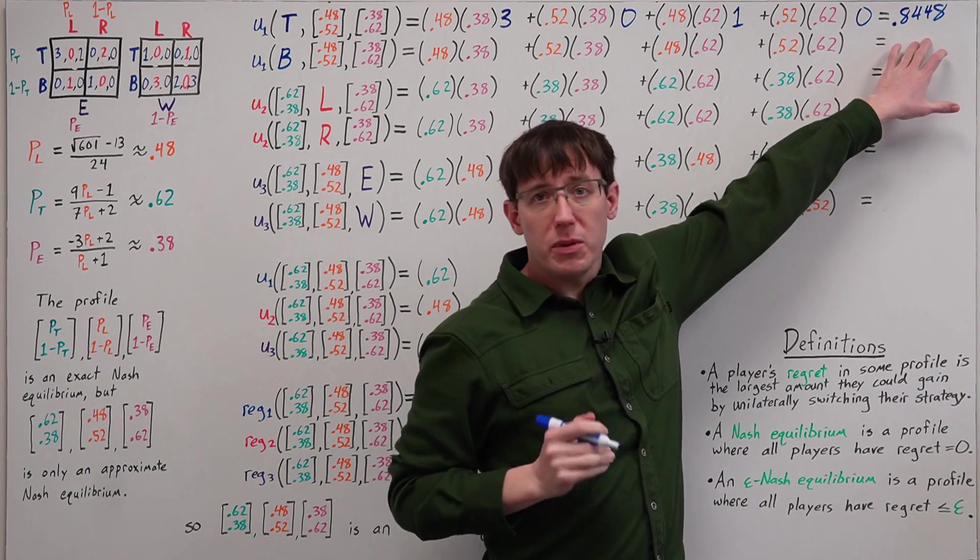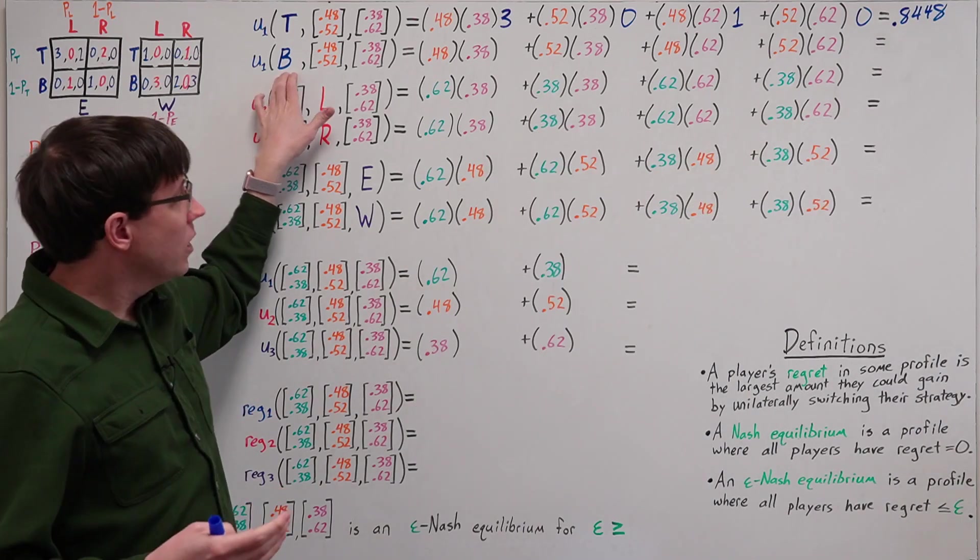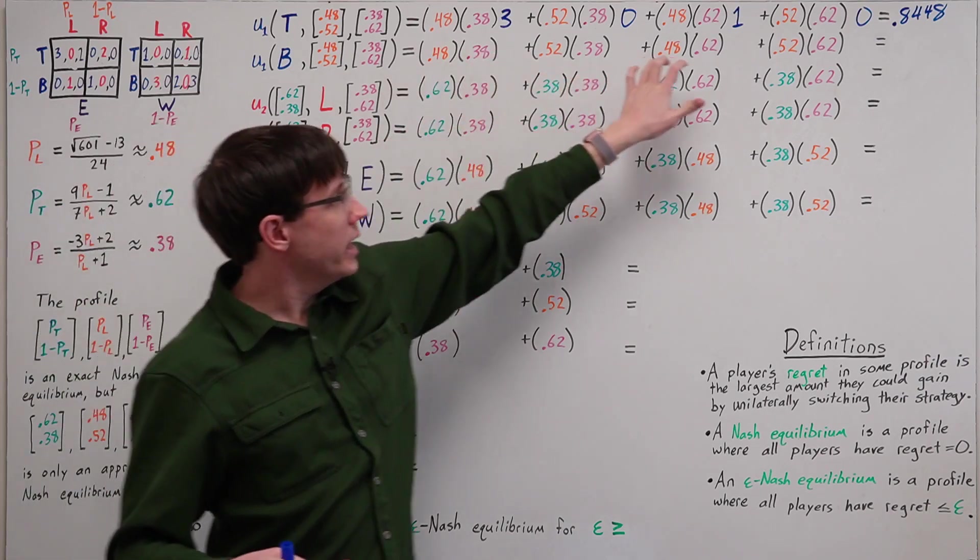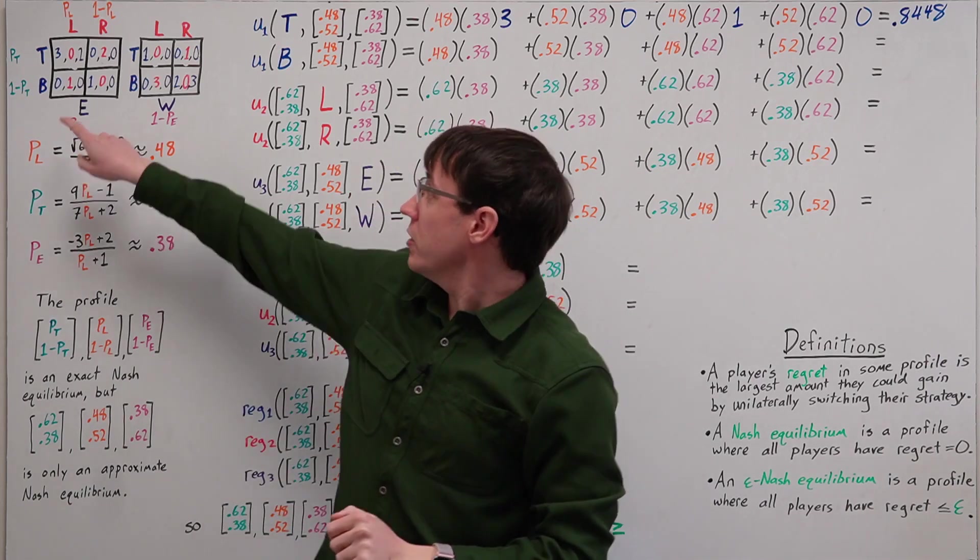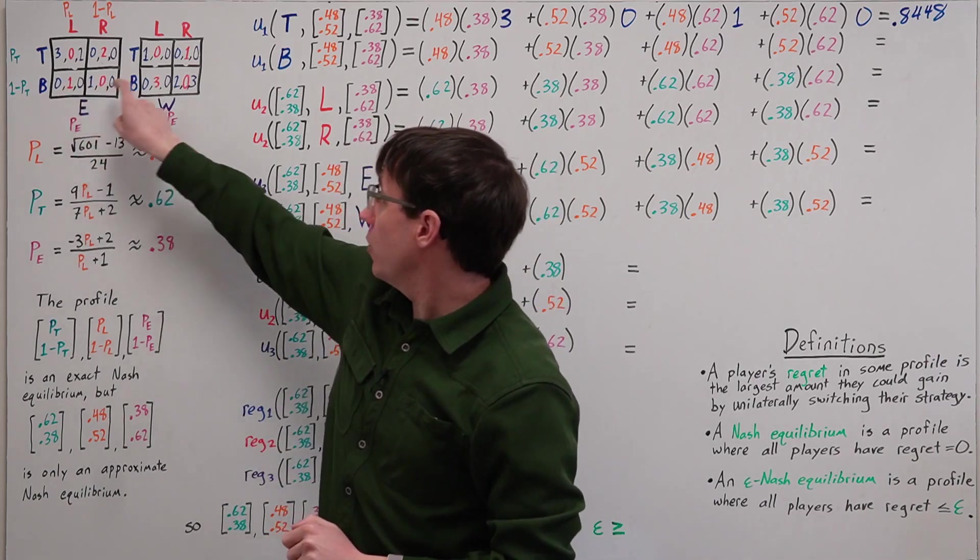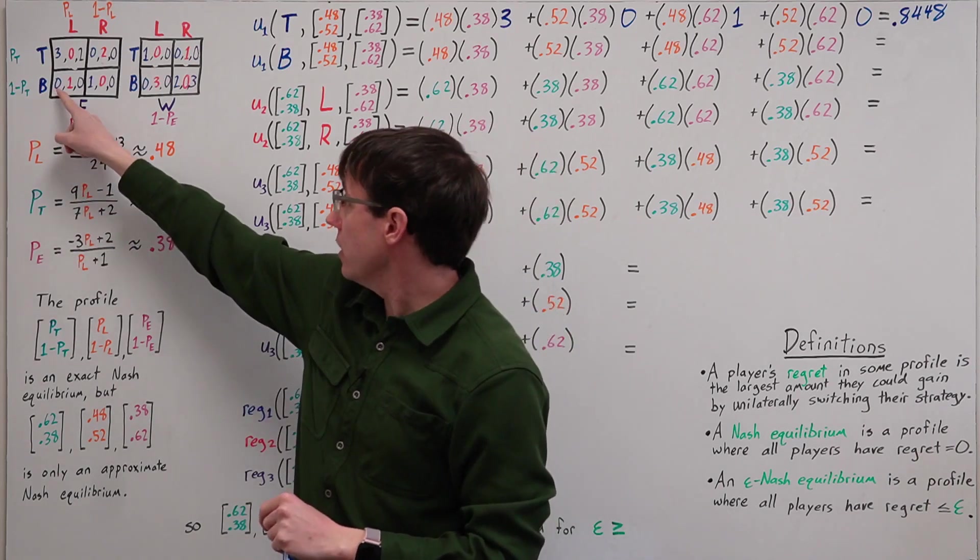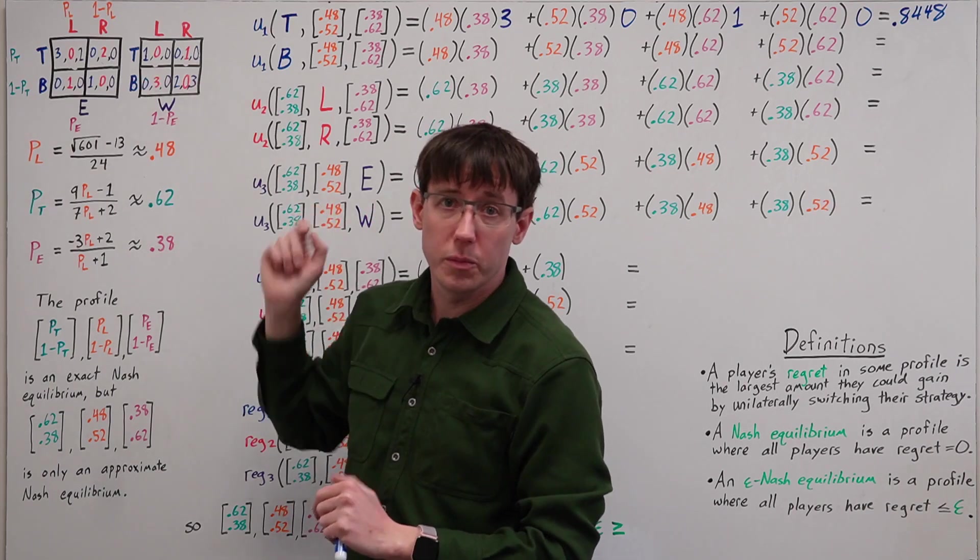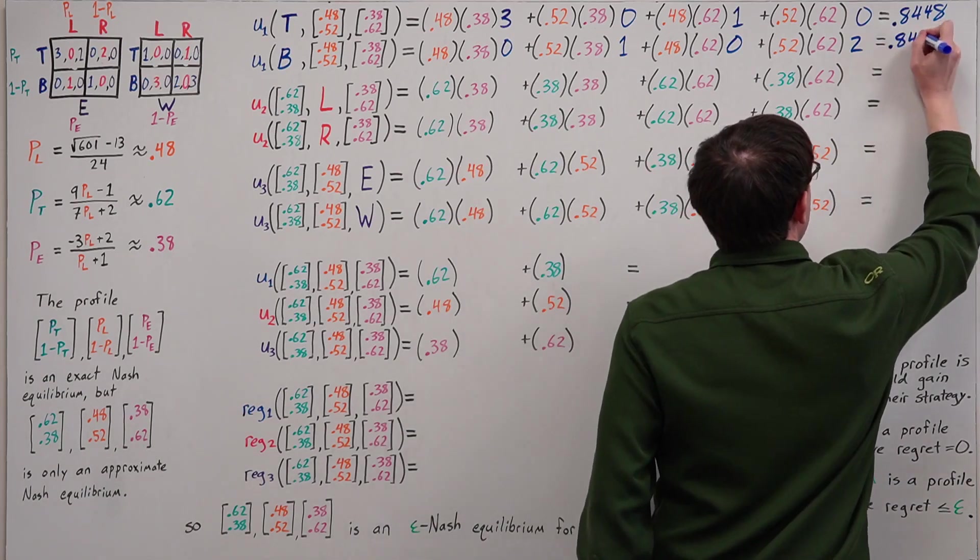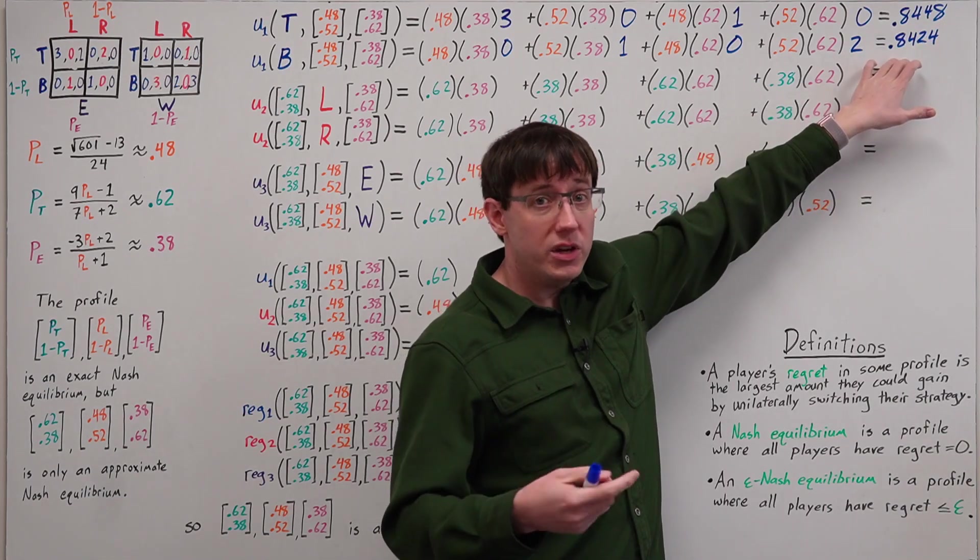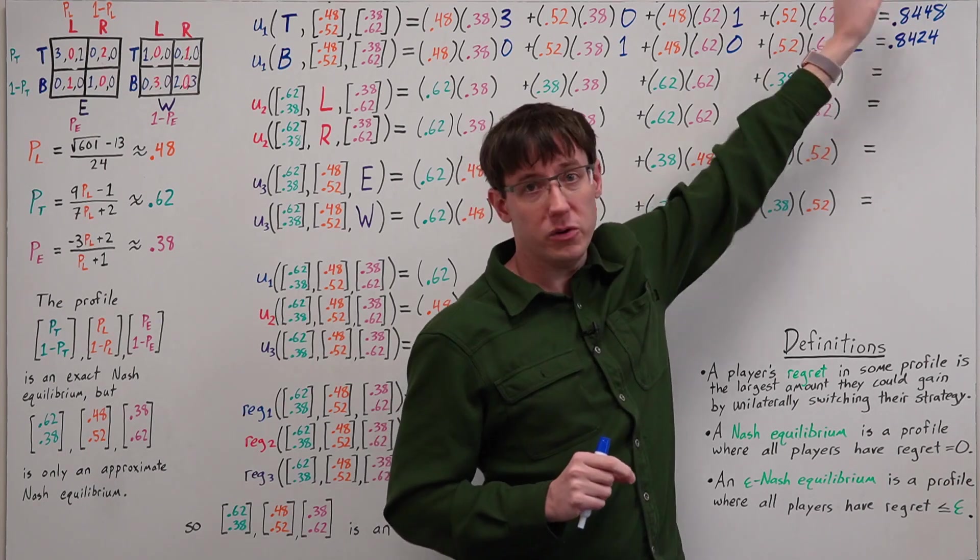When player one plays B, we'll use the same probabilities that we get from player two and three's strategies, but those will now tell us the probabilities of each outcome in the bottom row, where player one respectively gets utility 0, 1, 0, or 2. And when we sum it all up, we get an expected utility for B that's close to, but not the same as, the expected utility for T.